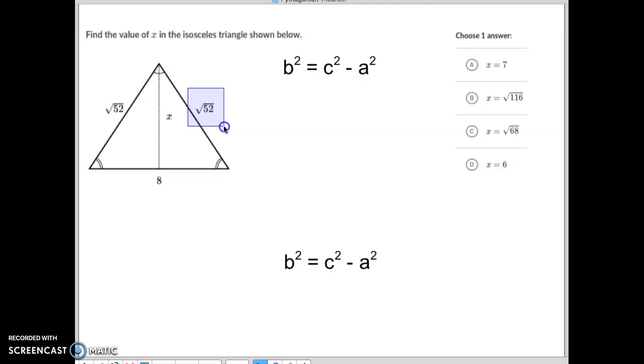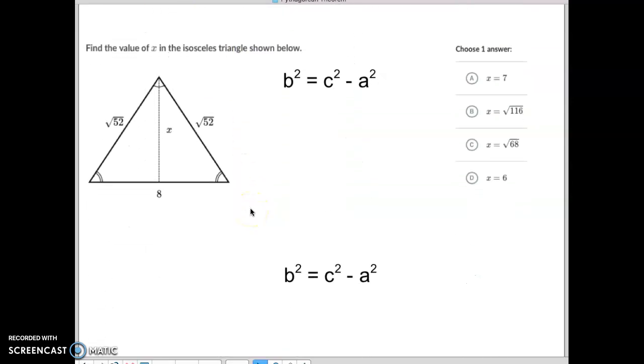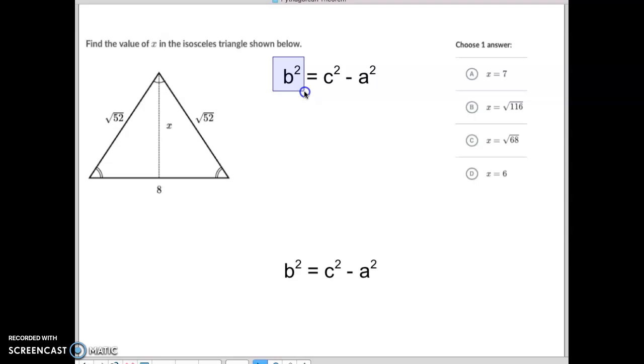notice that they've already given us the long value here of square root of 52. So, we don't use, like we did before, a squared plus b squared equals c squared, because you only do that when you want to find the long side. If you're trying to find the short side, and we did this before in our last one, you do b squared equals c squared minus a squared. So, we're going to take this, and we're going to subtract out this short side right here.